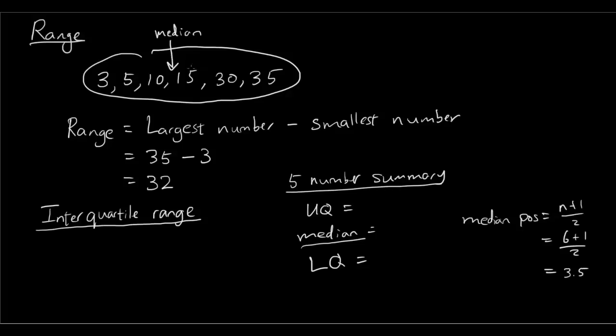Now that means we have the upper half of the data, which I'm going to circle using a different color. So we have the upper half here and the lower half here. The upper quartile is the median of the upper half, so the median of the upper half is 30. That is our upper quartile.